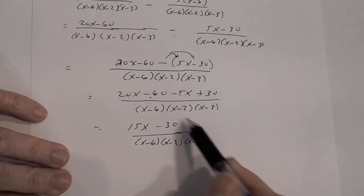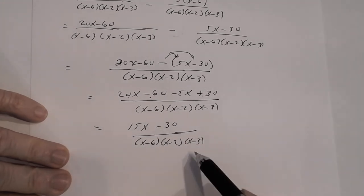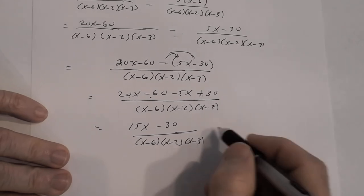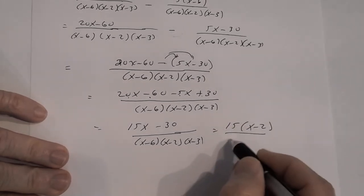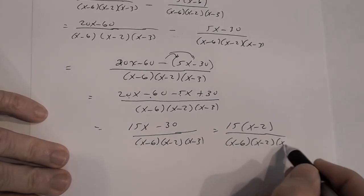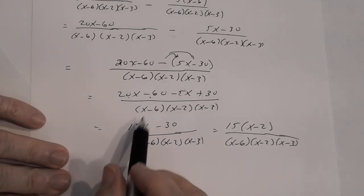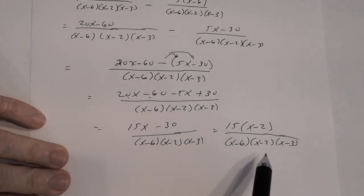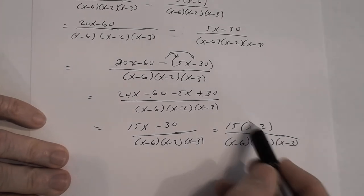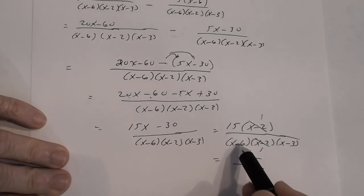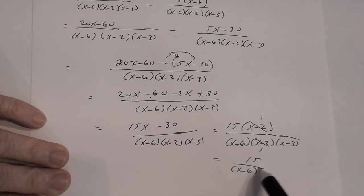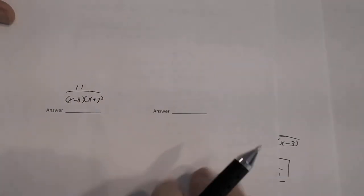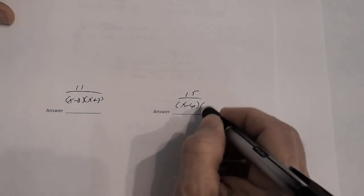The last step is to simplify. Factor the numerator — both terms have a factor of 15, so 15 times x minus 2, divided by x minus 6 times x minus 2 times x minus 3. Now reduce the common x minus 2 factor. The answer is 15 divided by x minus 6 times x minus 3. That's the answer to number 4.